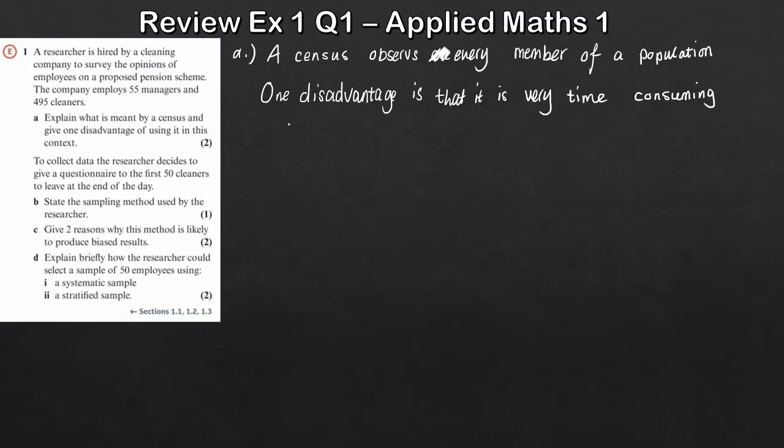Part B now. We're given a bit more context here. To collect data, the researcher decides to give a questionnaire to the first 50 cleaners to leave at the end of the day. What kind of sampling method is this? Well, this is just an opportunity sample.